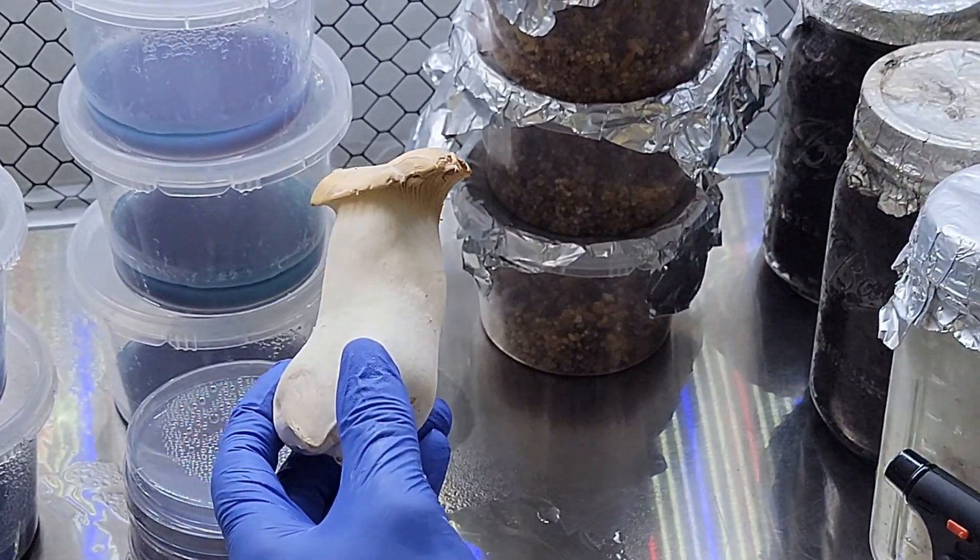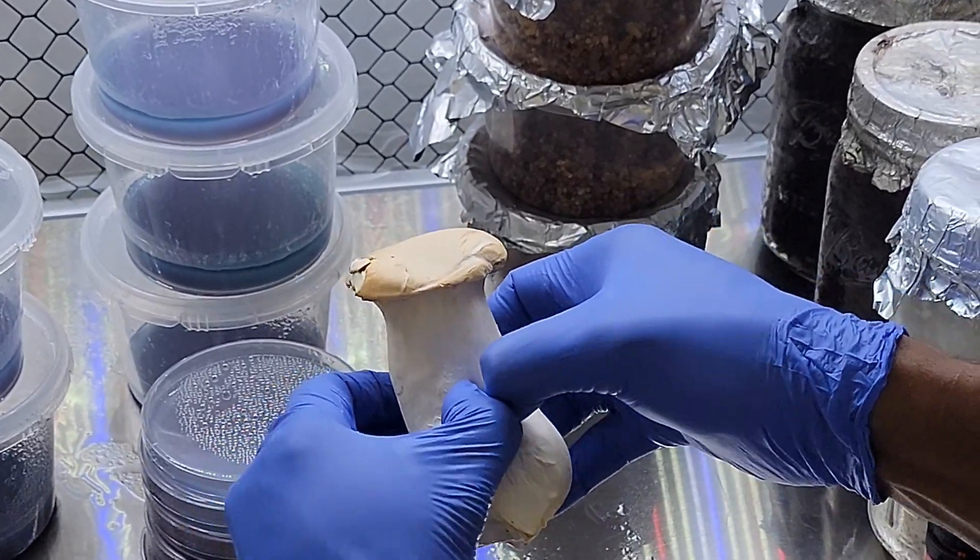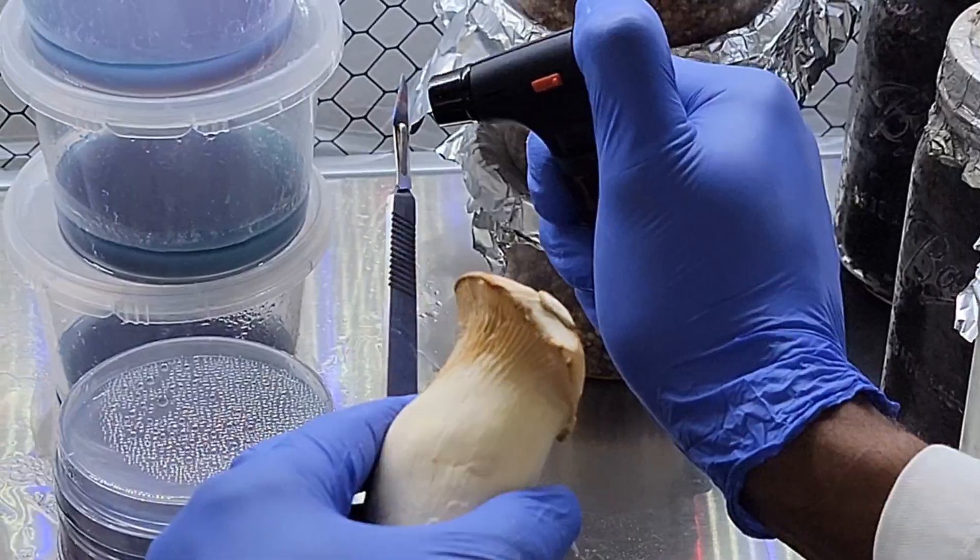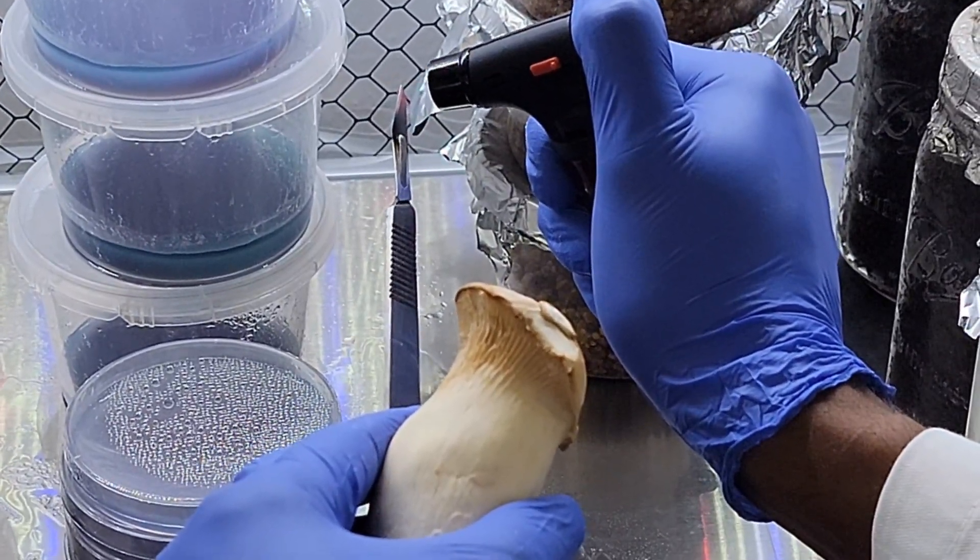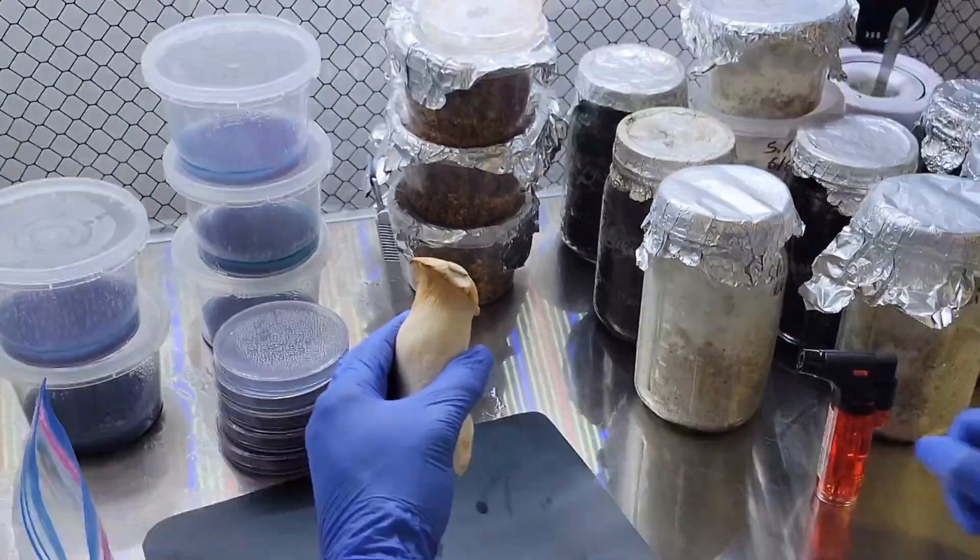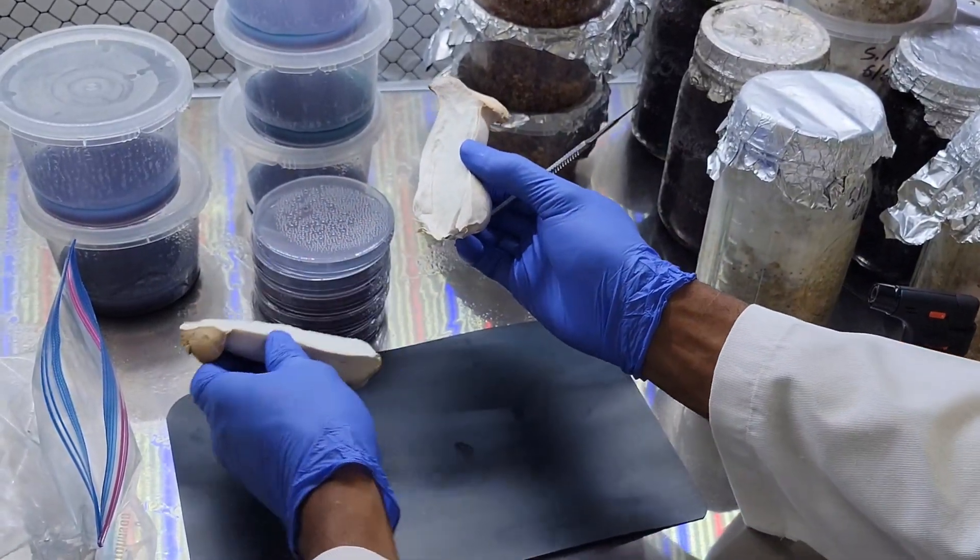So the key thing about cloning a mushroom that you want to remember, especially if you plan on cloning any wild specimen, is that you should always take your samples from the inside of the mushroom. The reason we do this is because contamination exists in the open air and on all surfaces, but on the inside of the mushroom none of that really exists - it's only the mushroom inside.